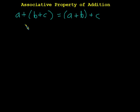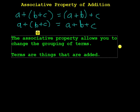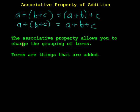One neat trick you can do with the associative property is you can just throw away the parentheses altogether. If I have something like this and I feel like the parentheses are just getting in the way, I just throw them away. All I'm doing is changing the way things are grouped. The associative property allows you to change the grouping of terms, and terms are things that are added together.